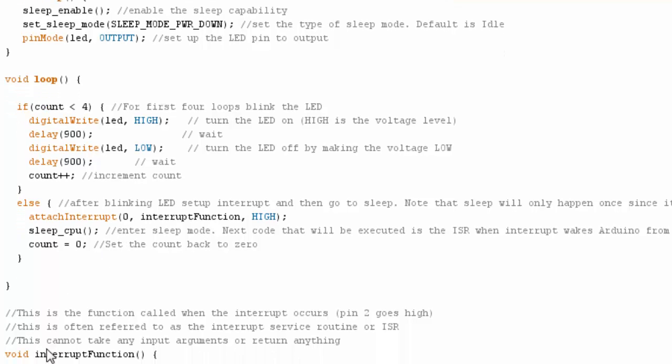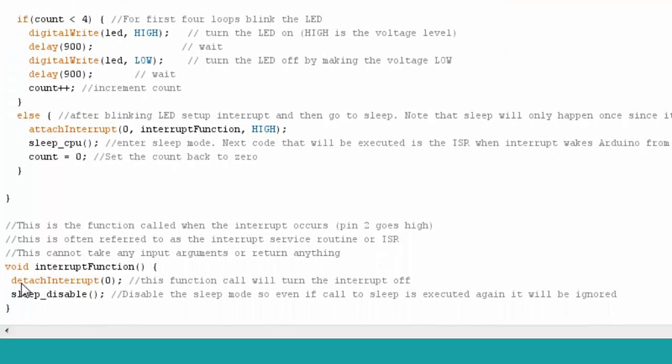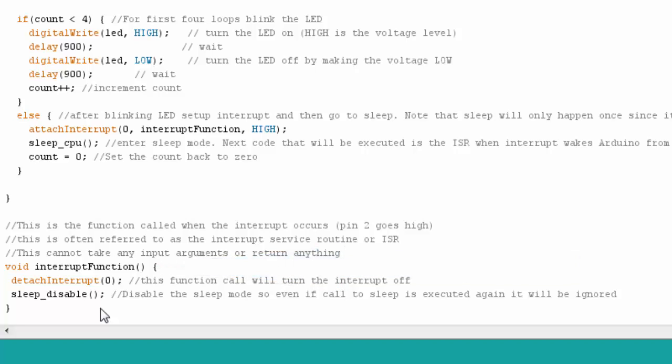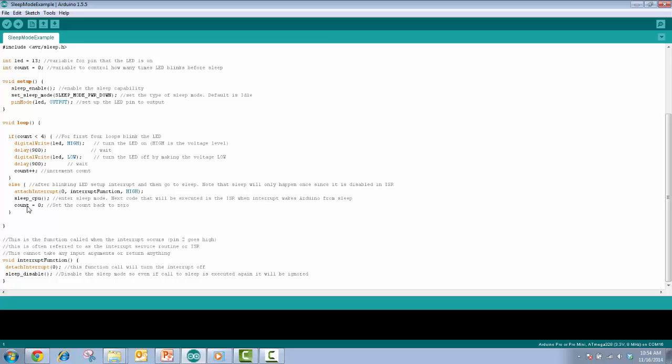So if we go down to the ISR, I then turn the interrupt off first, and then I disable sleep. So once I disable sleep, sleep is done. And that means that as my loop goes, this else statement will execute again, but since I disabled sleep, this will just be ignored. So what we're going to see happen is we're going to see the LEDs blink, we're going to go to sleep until I interrupt it, then I'm going to wake it up, and then you'll just see the LEDs blink from then on.